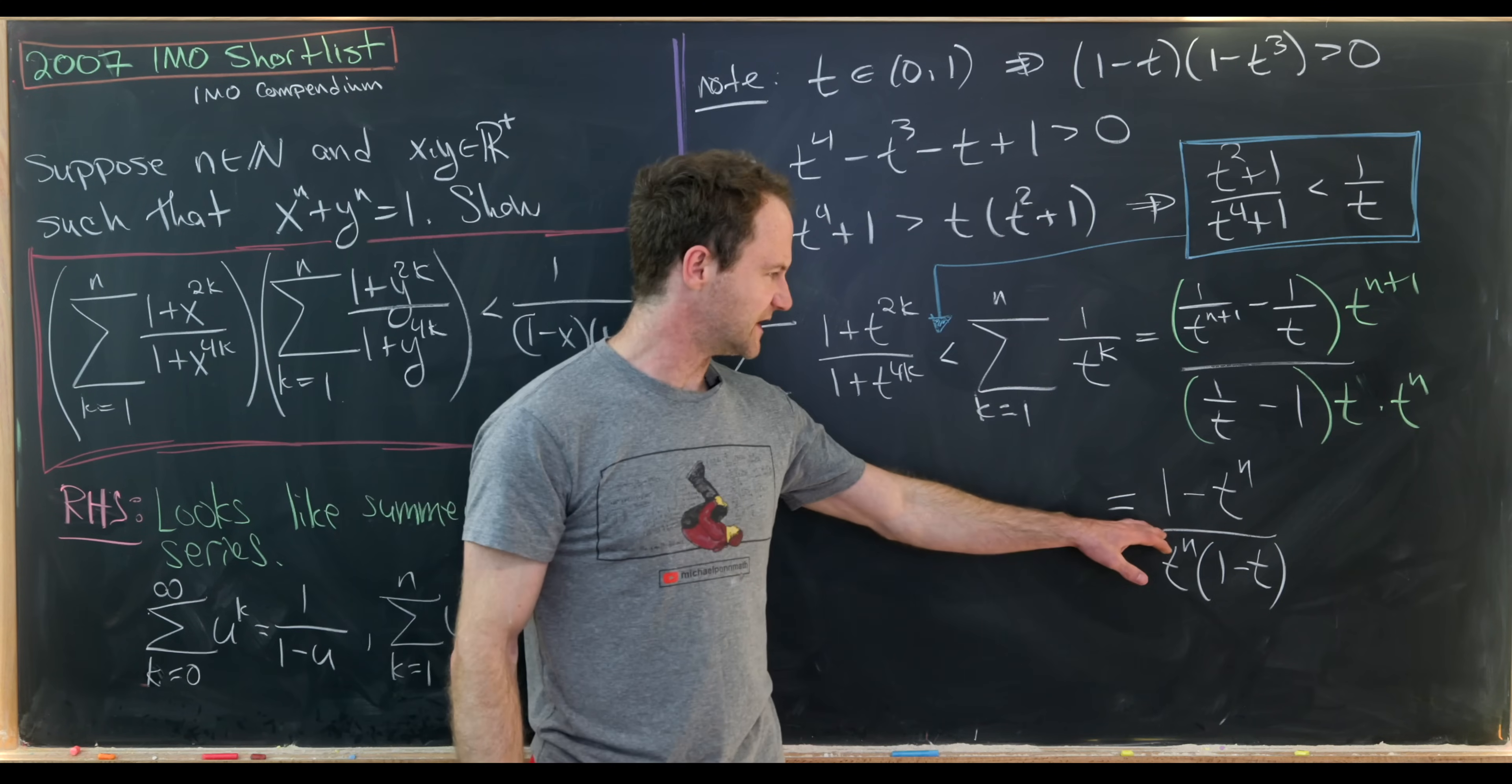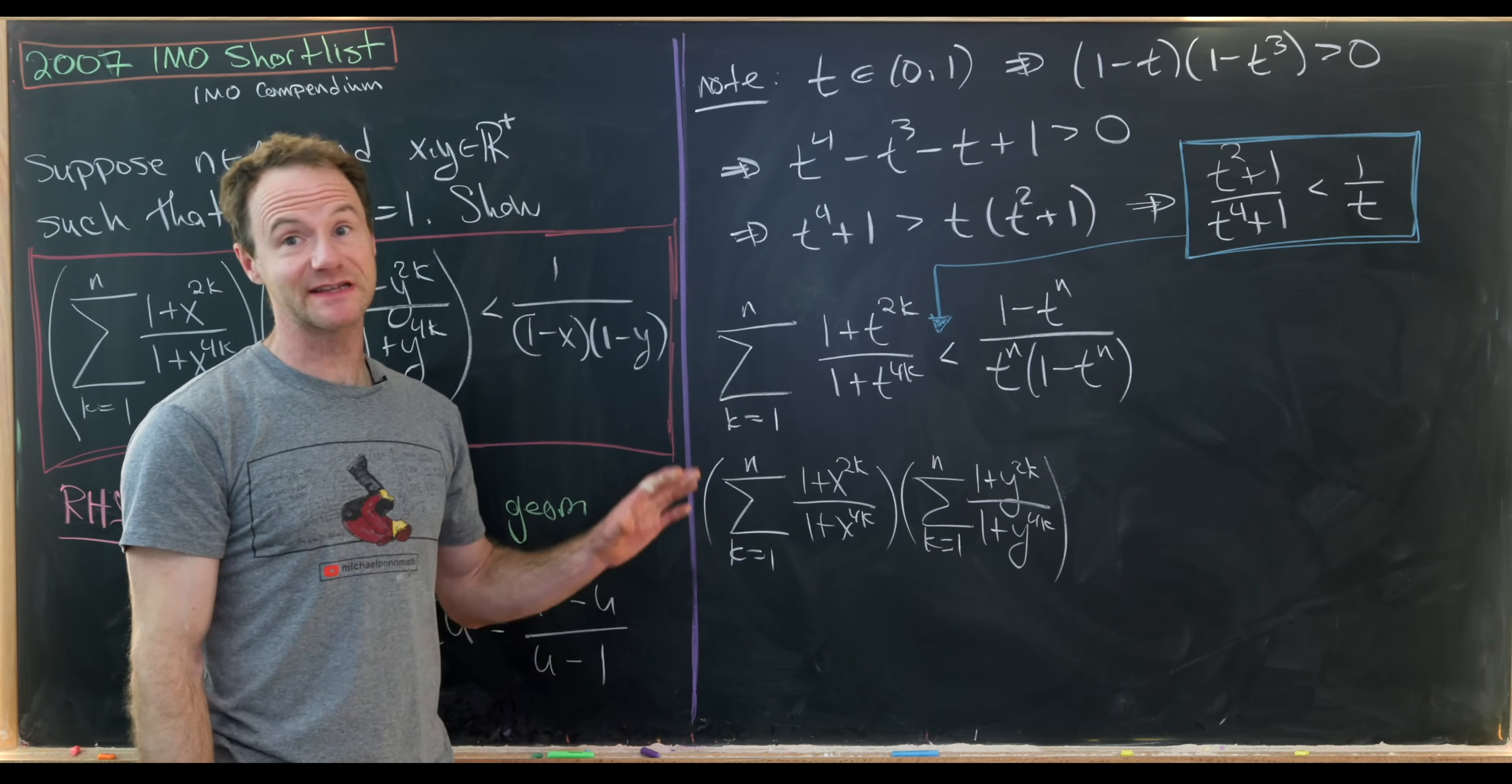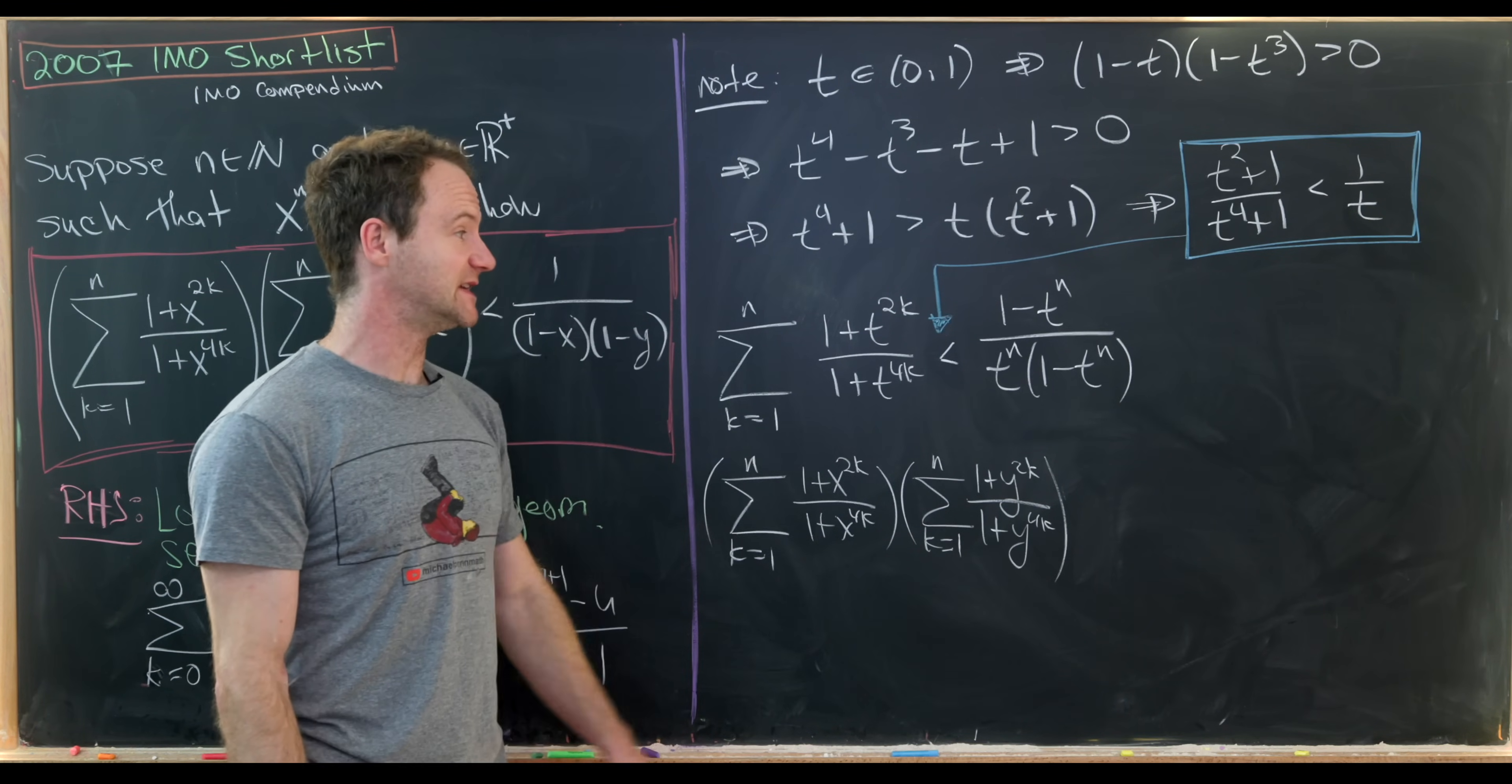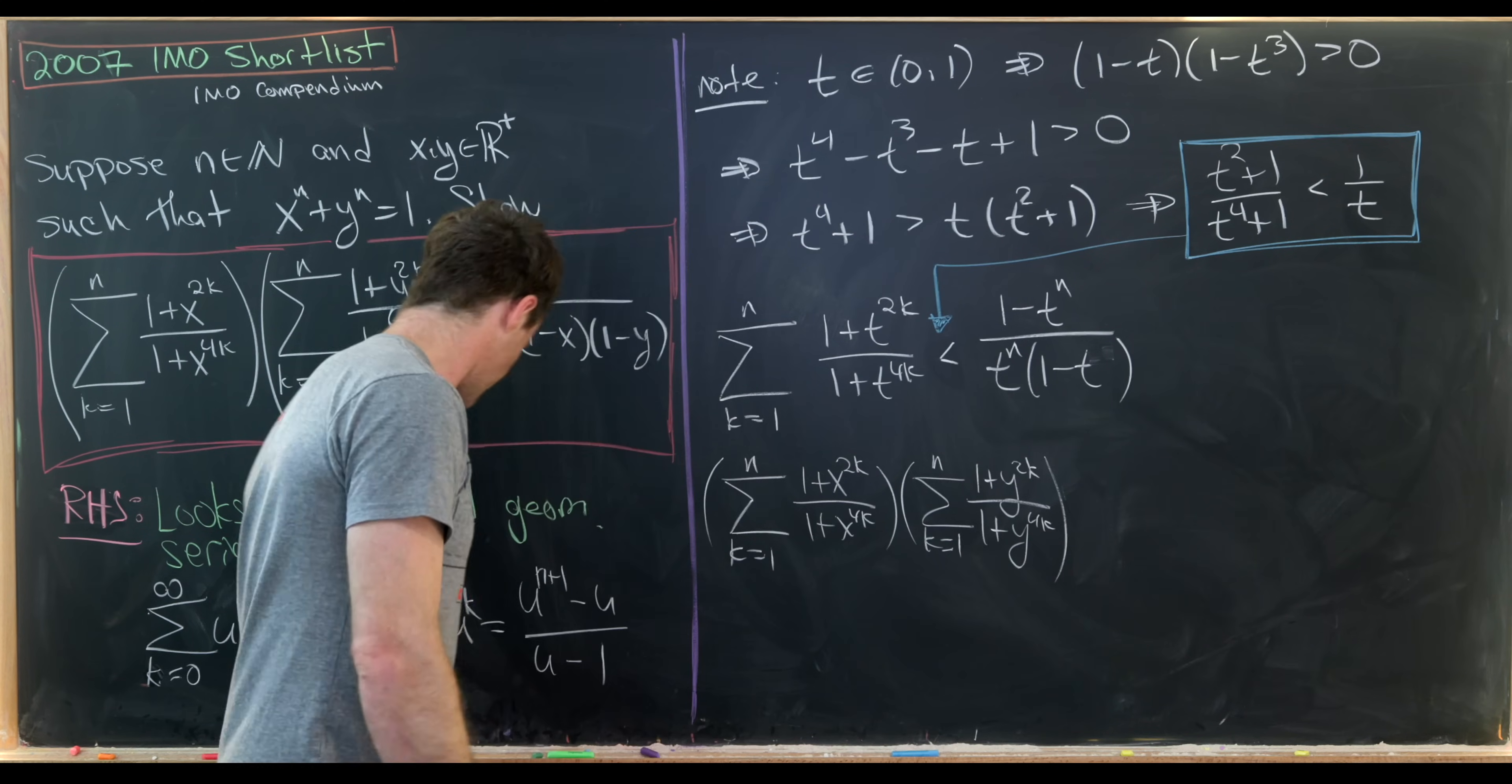Okay, so now let's actually bring this expression here and then we can finish it off. Okay, so we just derived the following inequality. Which doesn't get us all the way there, but it gets us almost the way to our goal. And that's this sum of this rational expression involving our t's is less than (1 minus t to the n) over (t to the n times 1 minus t). Okay, great.